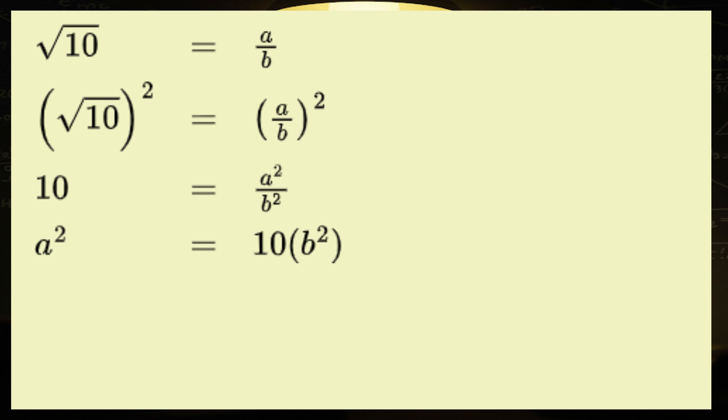Now, hold on to your calculators folks, because we're about to make some magic happen. No contradiction just yet, but trust me, we're laying down the groundwork for one, and it's going to be a doozy. So a squared equals 10 b squared, which means a squared is divisible by 10. And guess what? This is where the party really starts.